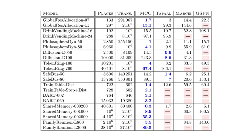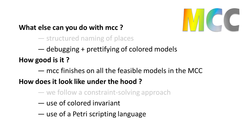Sheer performance is not our main goal. We rather seek to return a result for all colored instances used in the contest in a sensible time — because who needs to unfold a model too big to be analyzed anyway? At present, there are 193 instances of colored nets in the MCC repository organized into 23 different classes. We can return a result for 184 of these instances under competition conditions. Moreover, to the best of our knowledge, MCC is the only tool able to return results for at least one instance in all models.